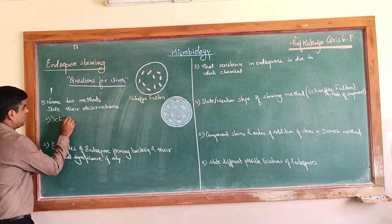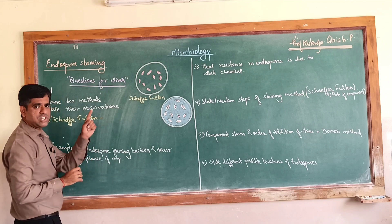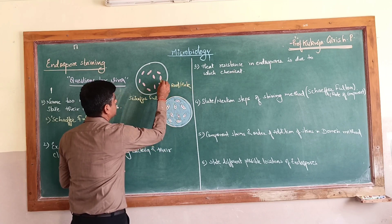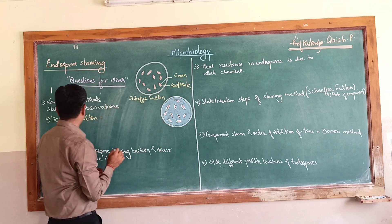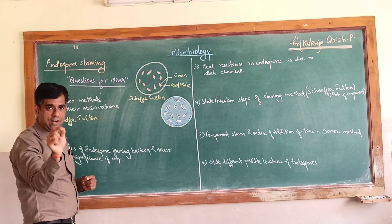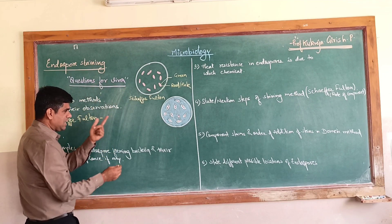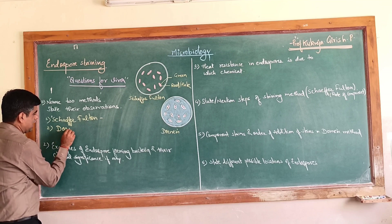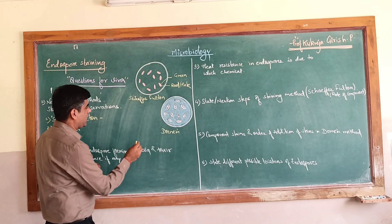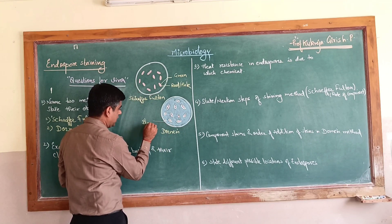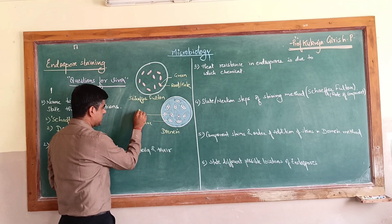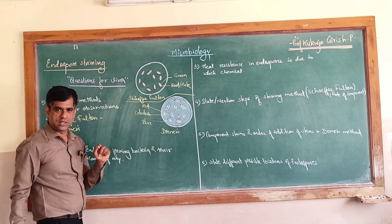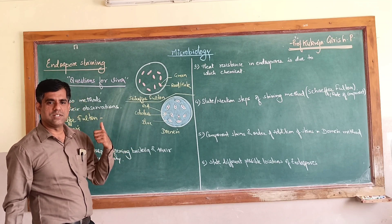In the Schaeffer-Fulton method, the vegetative cells appear red or pink, and the endospores appear green. The earlier method is Dorner's method. In Dorner's method, the background is bluish-black, the cells are colorless, and the spore appears red.